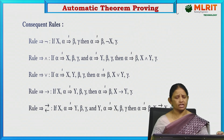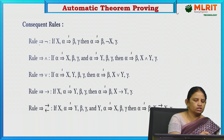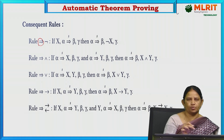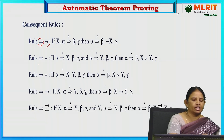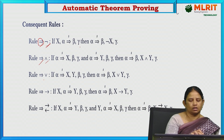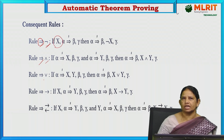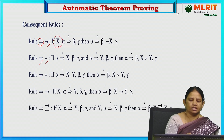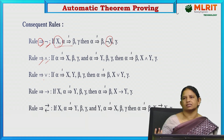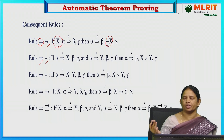Coming to the consequent rules. In the case of consequent rules, first there is an implication then a connective. For negation: if it is in the format x comma alpha tends to beta comma gamma — negation is applied for only one variable — then alpha implies beta, and negation x will be coming to the right-hand side. In the case of the antecedent rule, negation x comes to the left-hand side; in the case of consequent rules, negation comes to the right-hand side.